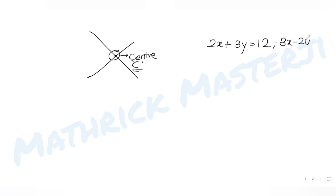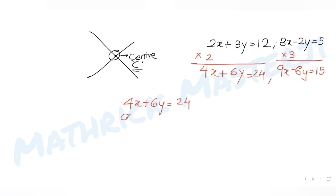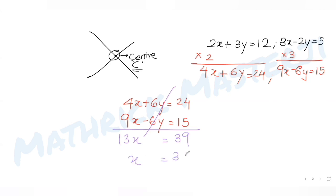To eliminate y, I'll make the coefficients of y equal. Multiplying the first equation by 2 gives 4x + 6y = 24. Multiplying the second by 3 gives 9x - 6y = 15. Adding both equations: 13x = 39, so x = 3.